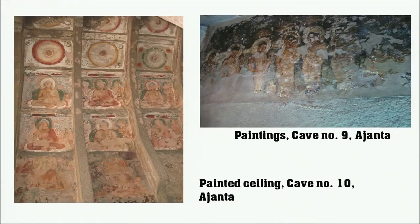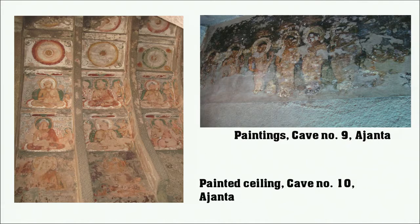Unlike the early rock shelters at Bhimbetka where surfaces were untreated, by the time we reach Ajanta — from 2nd century BCE to about the 4th-5th century CE — we see that the treatment of the surface was done on the walls. Cave walls were plastered and refined, and this was a collective work with different artisans: some expert in painting, some in lines, some as masons. The Mahajan Jataka panel is one of the long stories being depicted here through narrative scenes.